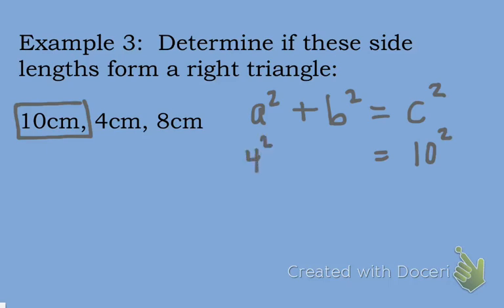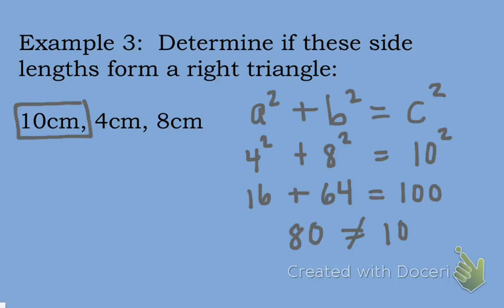I'm going to put 4 in place of a, and 8 in place of b. Now 4² is equal to 16, 8² is equal to 64, and 10² is equal to 100. When I add 16 plus 64, I get 80. And 80 is not equal to 100. So these dimensions do not form a right triangle.